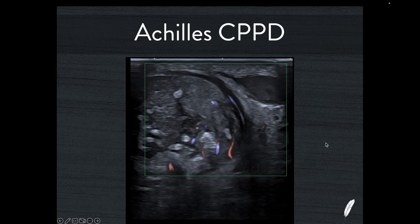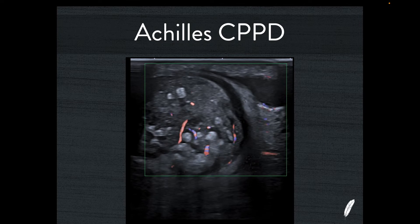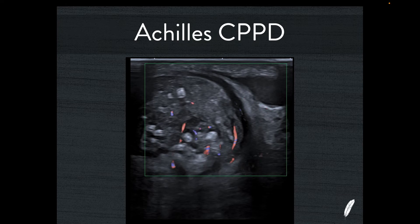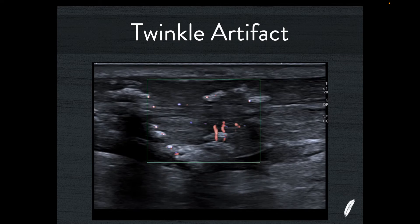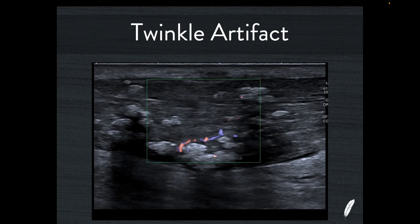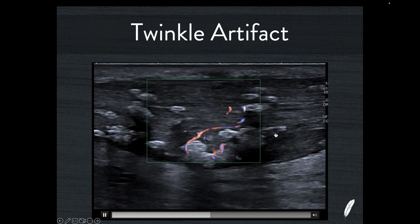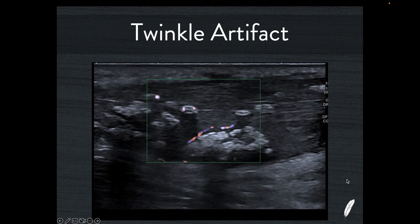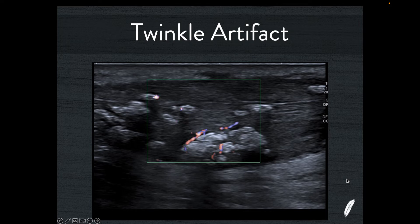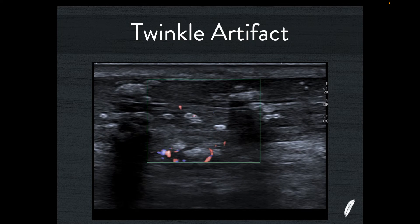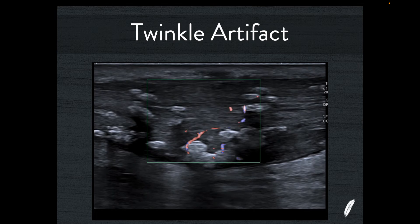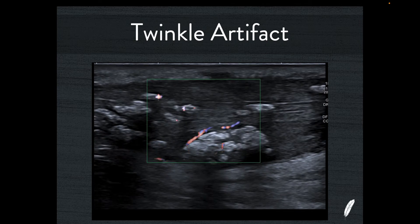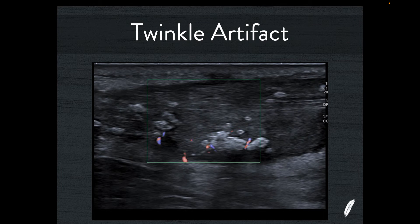This further proves that the fat pad around the Achilles and the peritenon are involved in an inflammatory response. In long axis, you can see vessels coursing through the collagen. You can also see occasional twinkle artifact — this is not real flow. Twinkle artifact must be caused by something crystalline in nature. CPPD — calcium pyrophosphate dihydrate deposition — certainly ticks that box, and so this is another clue that we're dealing with CPPD.